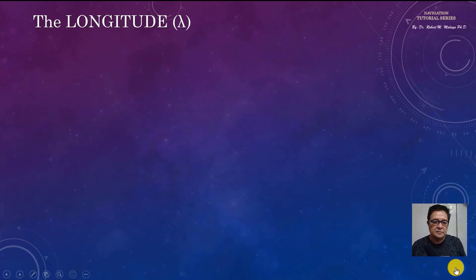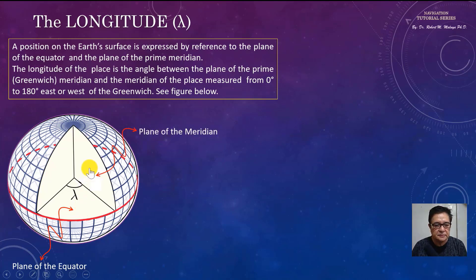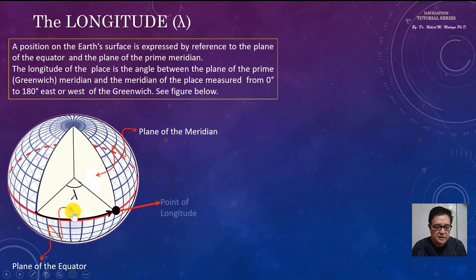The longitude. A position on the Earth's surface is expressed by reference to the plane of the equator and the plane of the meridian. The longitude of a place is the angle between the plane of the prime meridian and the meridian of the place, measured from 0 to 180 degrees east or west of the Greenwich or prime meridian. This is the prime meridian and this is the point of longitude.